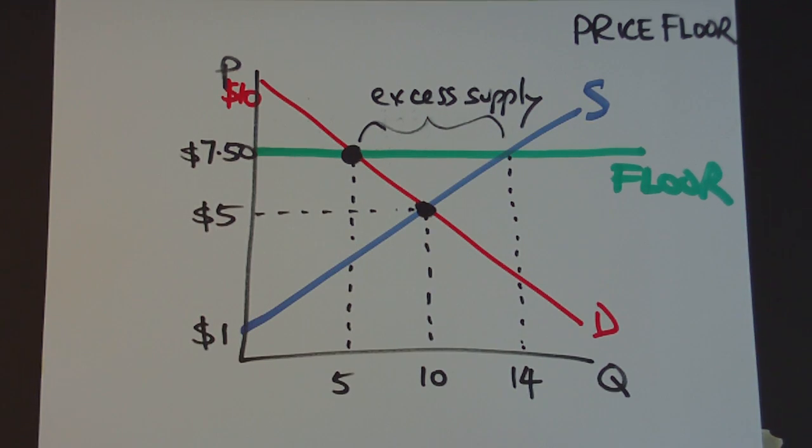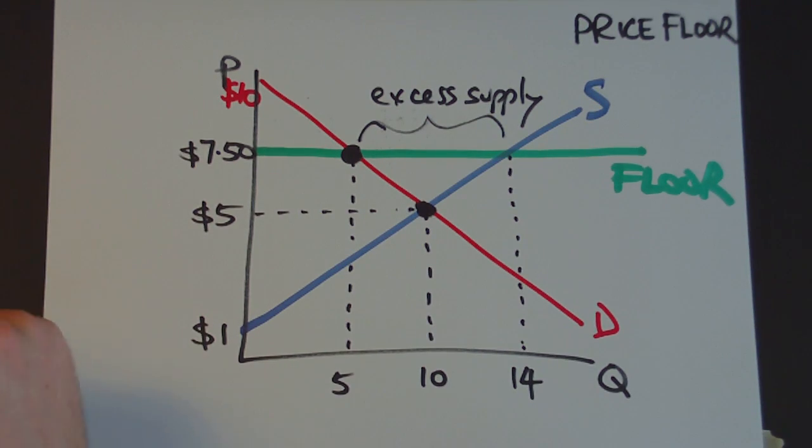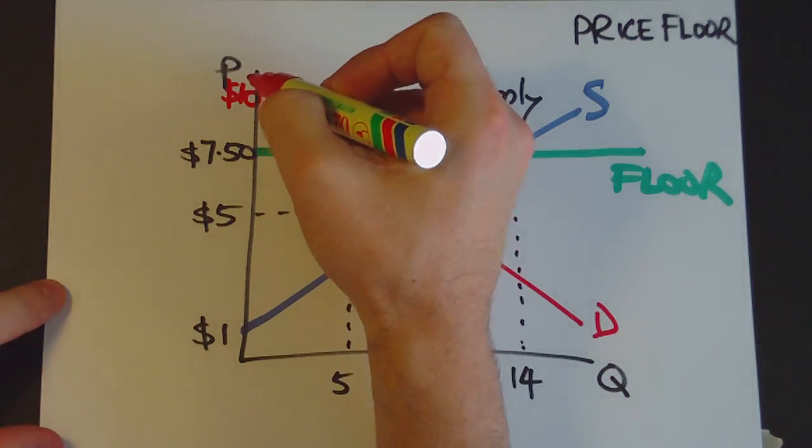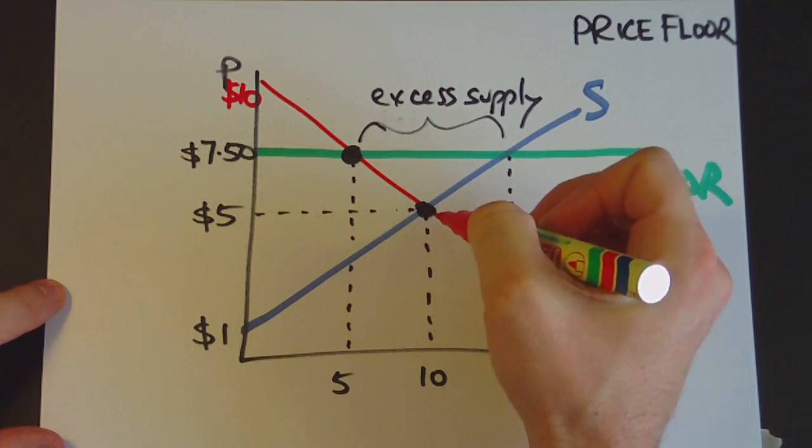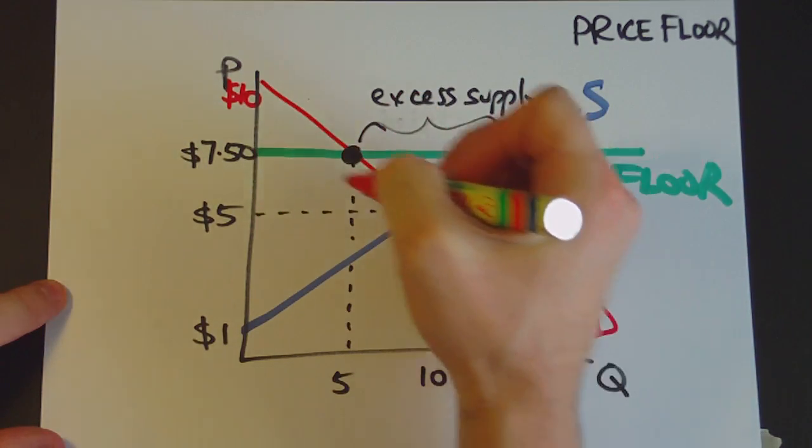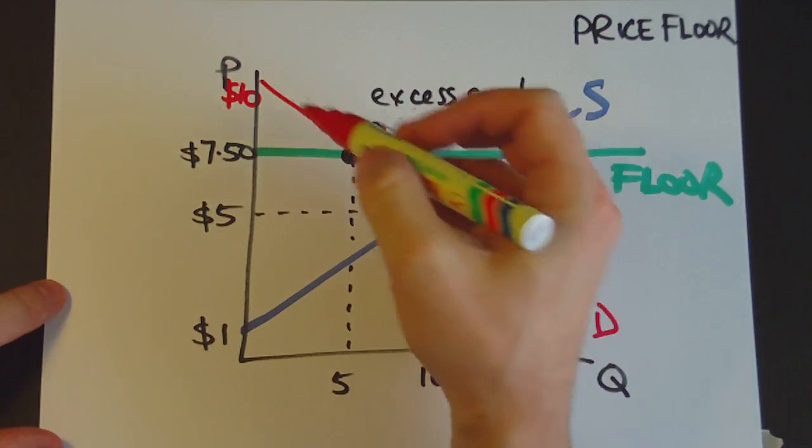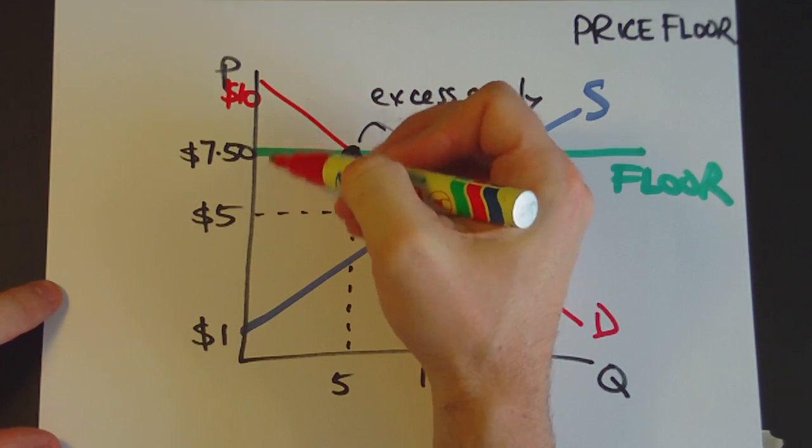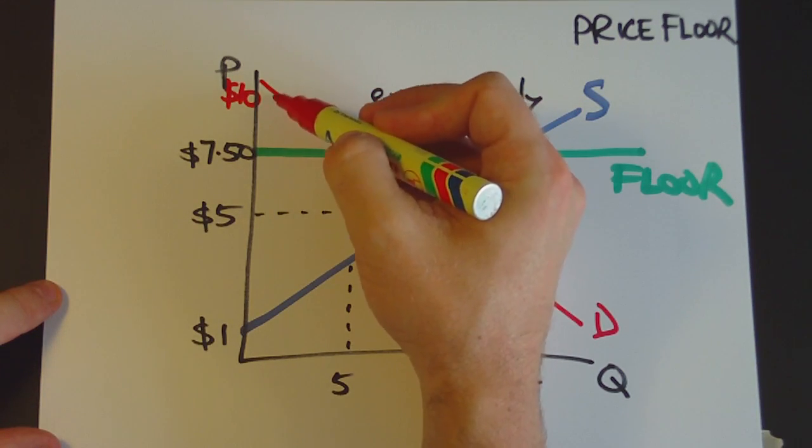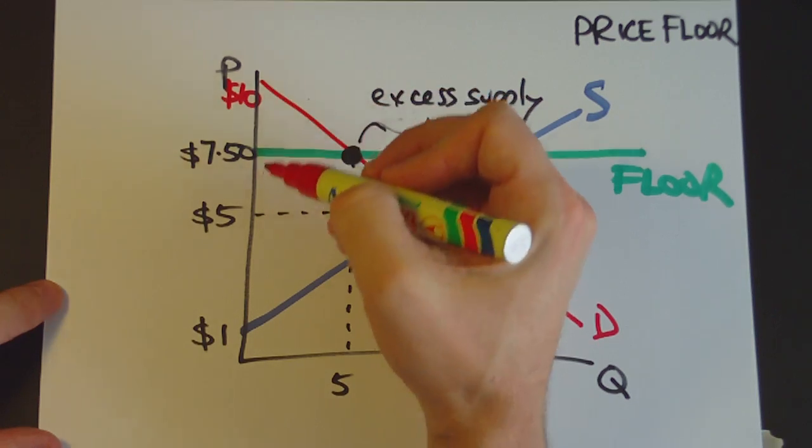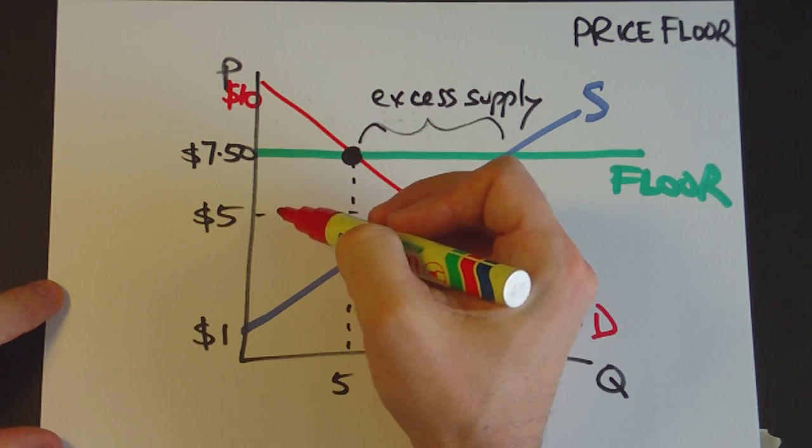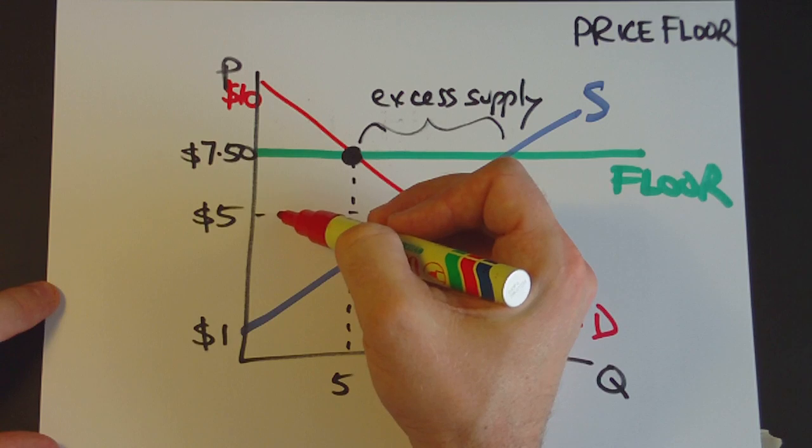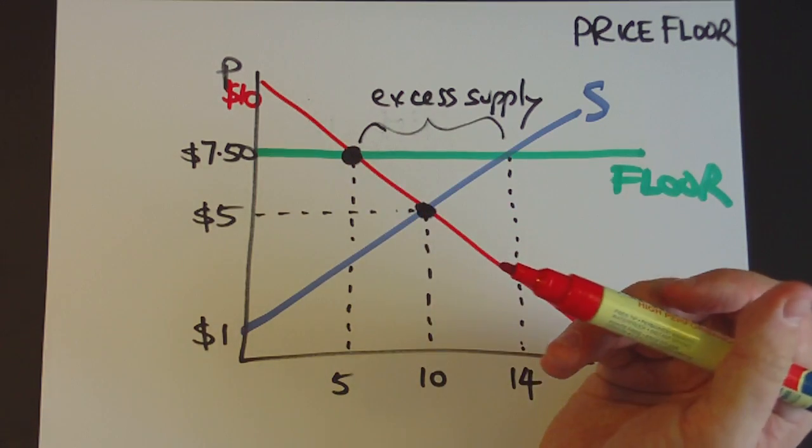Now what happens with consumer and producer surplus in this case? Well, consumer surplus under equilibrium, remember, it's this entire triangle here. Consumer surplus is the bonus amount, the amount that consumers value the good or the service, but they actually don't have to pay it. They only have to pay the $5 market price. So it's almost like a savings. It's a bonus.